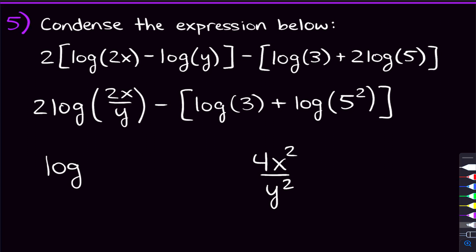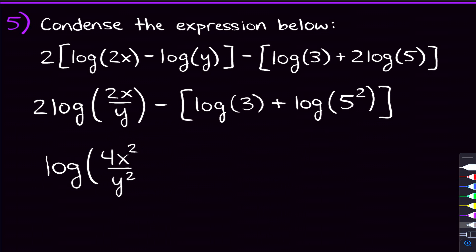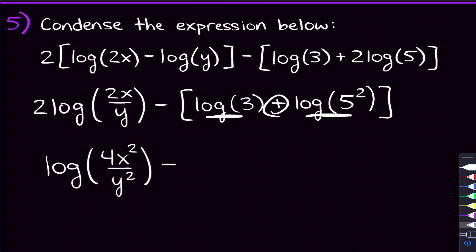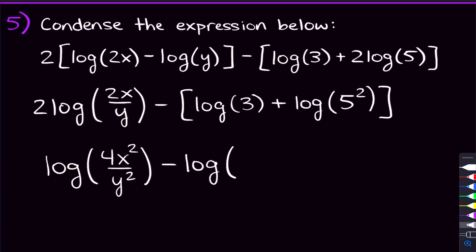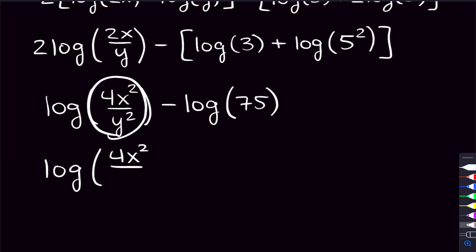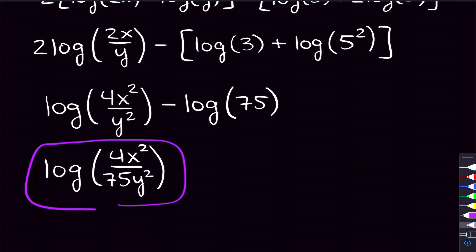We're going to write this log as the log of 4x² over y². Then we have minus the set of brackets where we have two logs being added, which means we combine them into one log by multiplying the arguments. Five squared is 25, so we have 25 times 3, which is 75. Now we have two logs being subtracted, so we combine them into one log by dividing the arguments. The 75 ends up in the denominator, giving us the log of 4x² over 75y². That is the answer for the last problem.